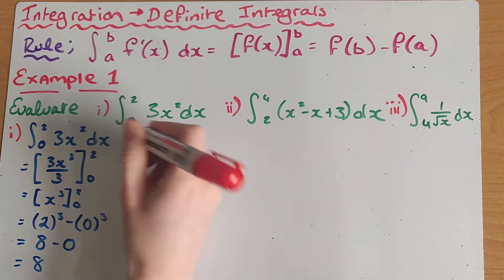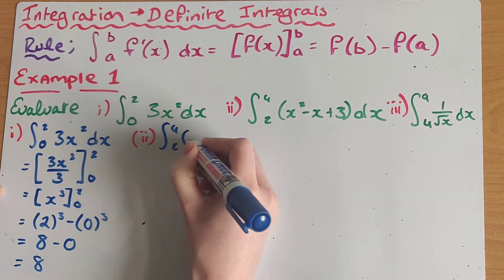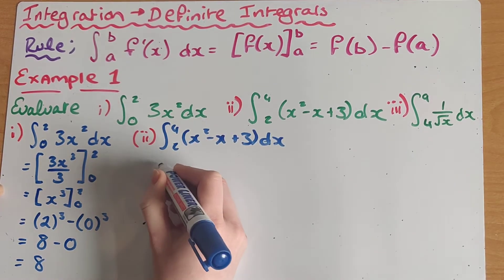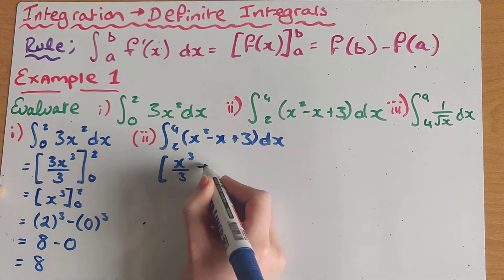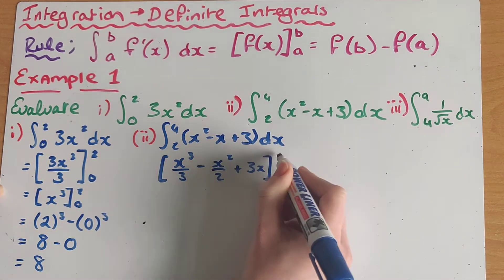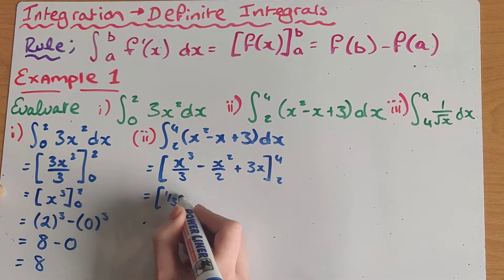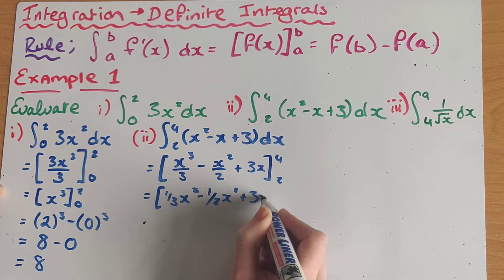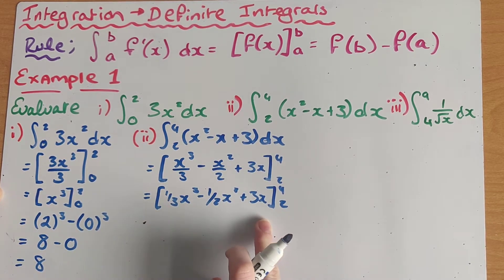Now we're going to look at part two, which gives me the definite integrals of four and two. We have x² minus x plus three dx. So again, I'm going to raise each of the powers by one and divide by the new power. So I get x³ over three minus x² over two plus 3x, and we're going to leave our integral limits on the outside. Simplifying, I have ⅓x³ minus ½x² plus 3x with my definite integrals on the outside.